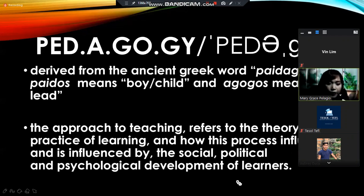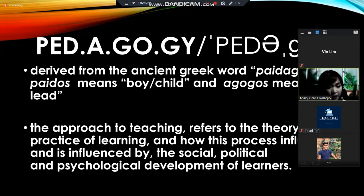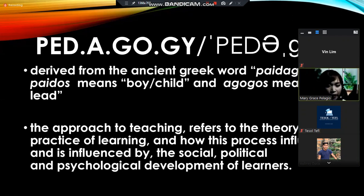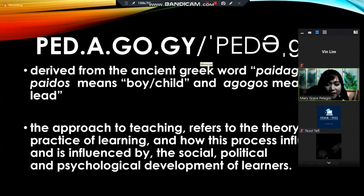Like many other first schools, the King's School had links to the church and today operates as a public school. The content of the curriculum could be split into two sections: the Trivium, which includes grammar, rhetoric, and logic, and the Quadrivium, which includes arithmetic, astronomy, geometry, and music.